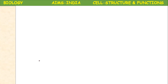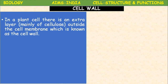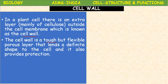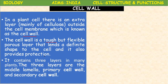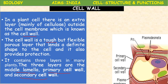Cell wall: in a plant cell there is an extra layer, mainly of cellulose, outside the cell membrane, which is known as the cell wall. The cell wall is a tough, rigid but flexible, porous layer that lends a definite shape to the cell and also provides protection. It is present only in plant cells. It contains three layers in many plants: the middle lamella, primary cell wall, and secondary cell wall.